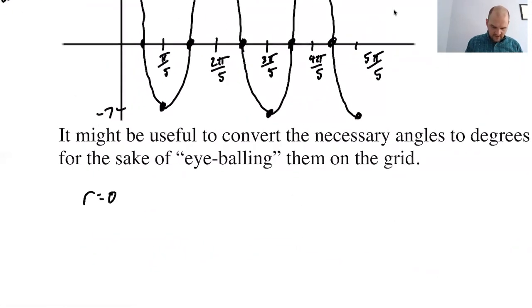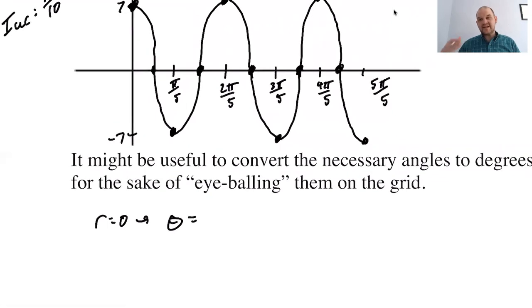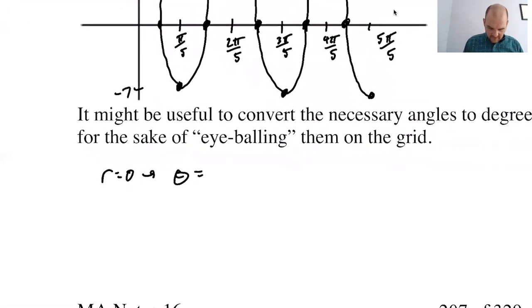So r equals 0 gives me theta is like everything I didn't label. So I was really counting by pi over 10s. So it's going to be pi over 10, 3 pi over 10, 5 pi over 10. Pi over 2 likes to show up. So that's 5 pi over 10, 7 pi over 10, and then 9 pi over 10.